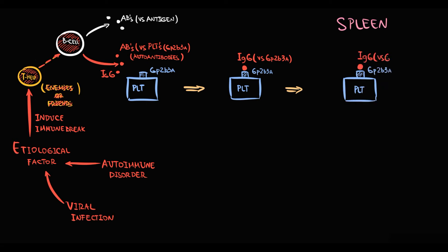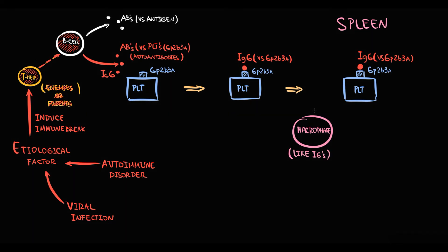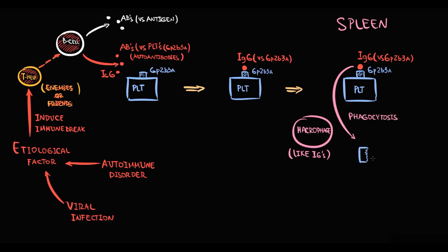In the spleen there are many macrophages. A key feature of macrophages is that they are attracted to immunoglobulins. When platelets arrive in the spleen with bound immunoglobulins, splenic macrophages rapidly bind to the immunoglobulin G on the platelet surface and by phagocytosis remove and destroy the platelets. As a result, the platelet count in circulation decreases and thrombocytopenia develops.